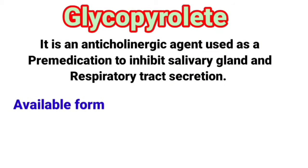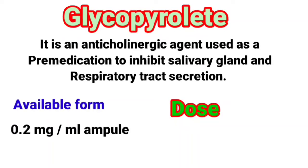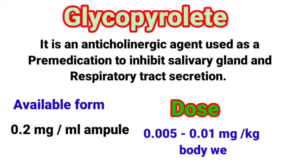Available Form: Glycopyrrolate is available in a 0.2 mg per ml ampoule. The dose is 0.005 to 0.01 mg per kg body weight.